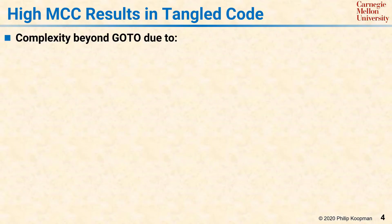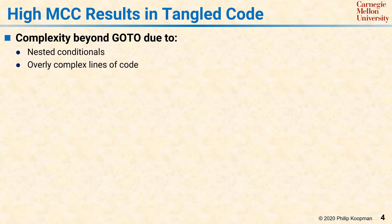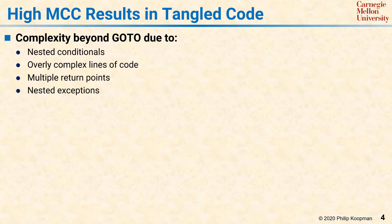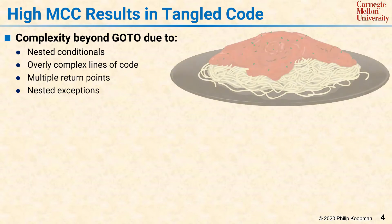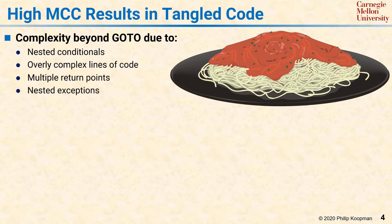Regardless of whether you use MCC or SCC, a high complexity metric means that you have tangled code. In practice, this complexity can arise from multiple sources. Of course, using go-tos can easily result in both high complexity and impenetrable control flow in general. However, also contributing to complexity can be nested conditionals, overly complex operations in a single line of code, multiple return statements, and nested exceptions, even if these do not necessarily affect the complexity metric itself.